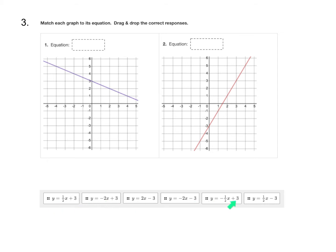Notice how all these equations are written in slope intercept form, which is y equals mx plus b, where m is the slope and b is the y-intercept. That's where it crosses the y-axis.